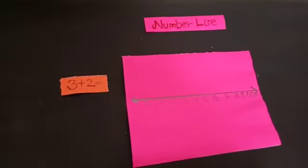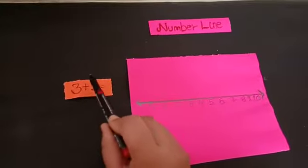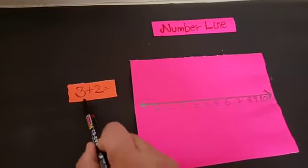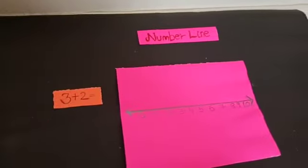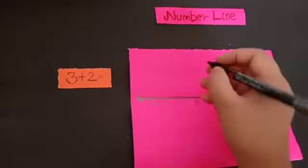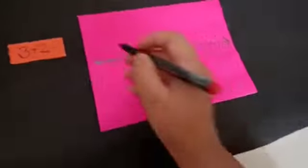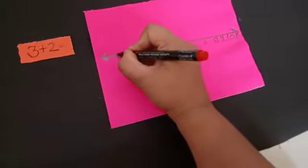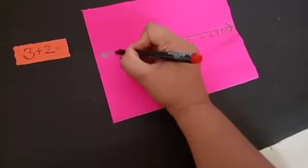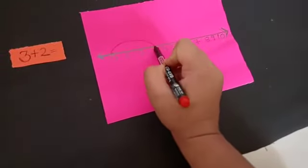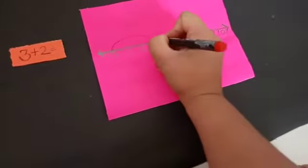So our first number is 3. We are going to point out 3 in it. Starting from 0, we will jump first up to 3. So from 0, we will jump up to 3.